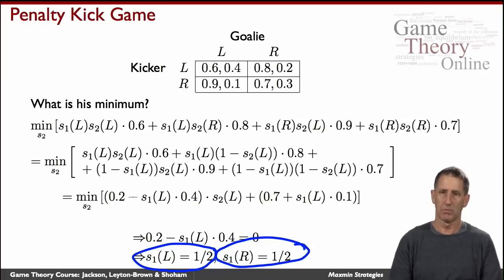And so by this maxmin calculation, we see that the kicker figures out that in equilibrium, they better randomize half-half between left and right.